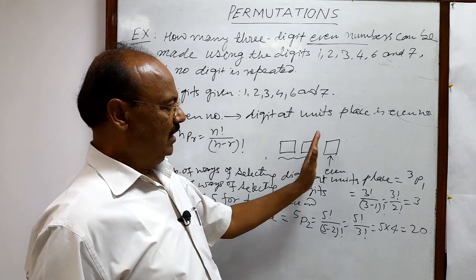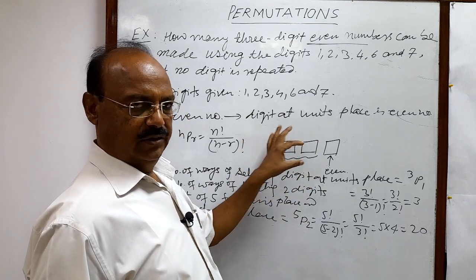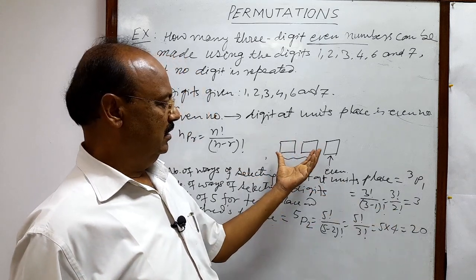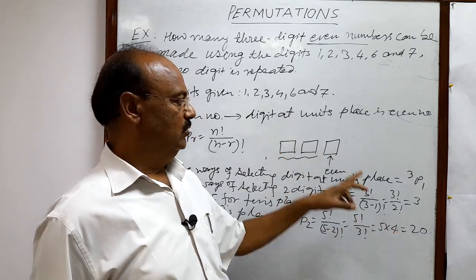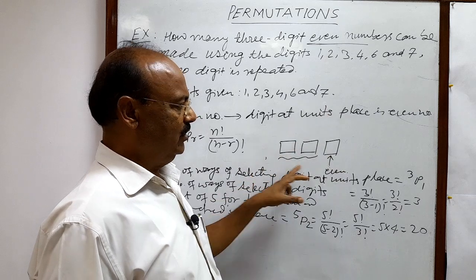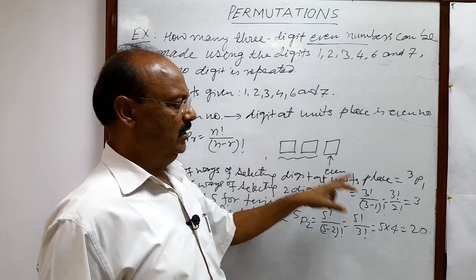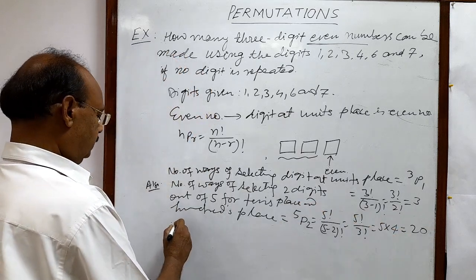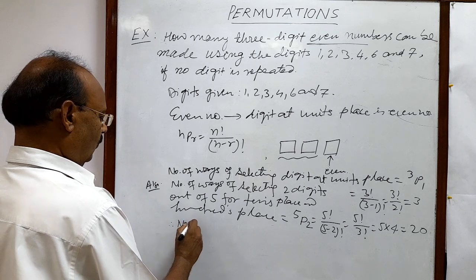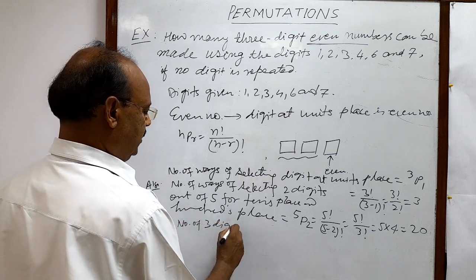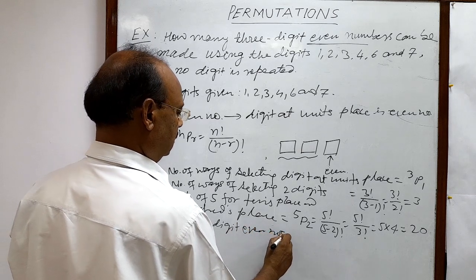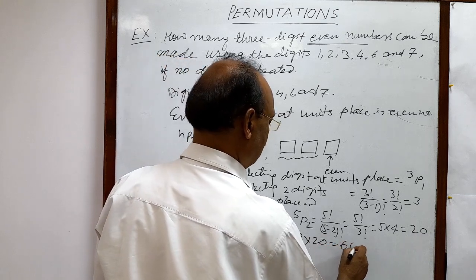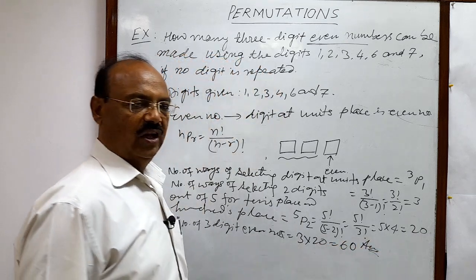So one part of this job means forming a number has been done in 3 ways and rest part has been done in 20 ways. So this entire job, this entire formation of 3 digit even numbers will be multiplication of 3 and 20 that is 60. Therefore, number of 3 digit even numbers will be 3 into 20, this is equal to 60. This is the answer.